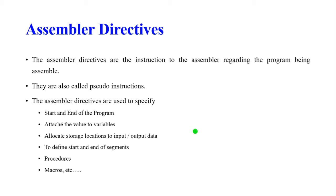The assembler converts the assembly level language into the machine level language. Assembler directives are instructions to the assembler regarding the program being assembled — how the program is to be assembled. They are also called pseudo instructions.